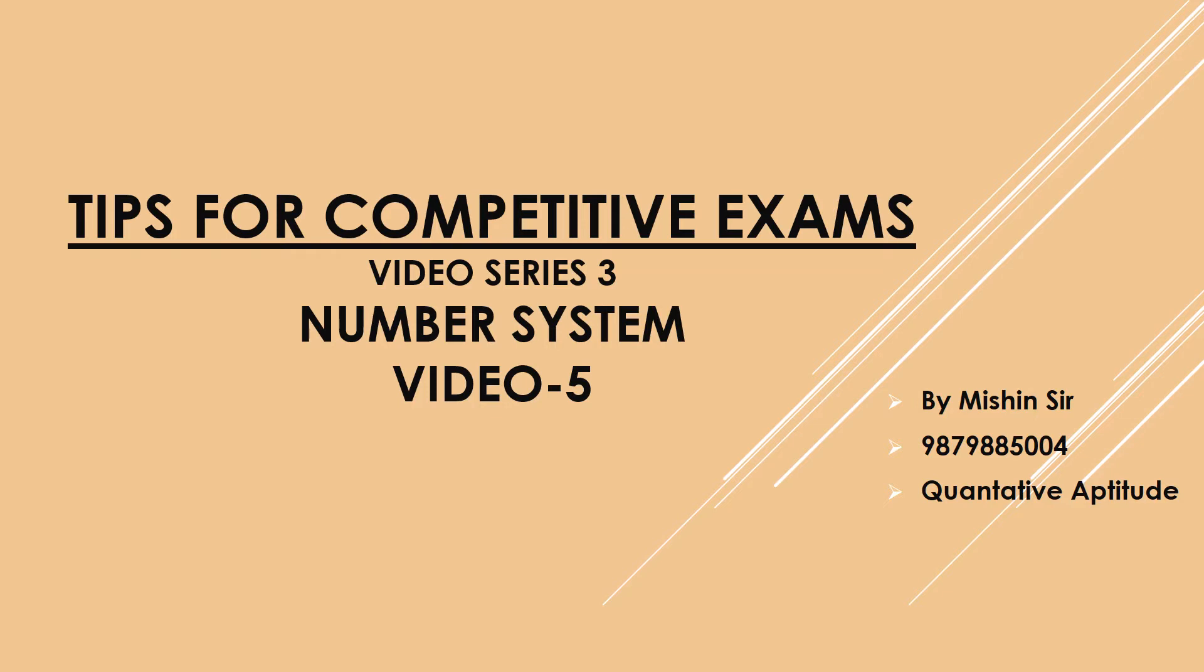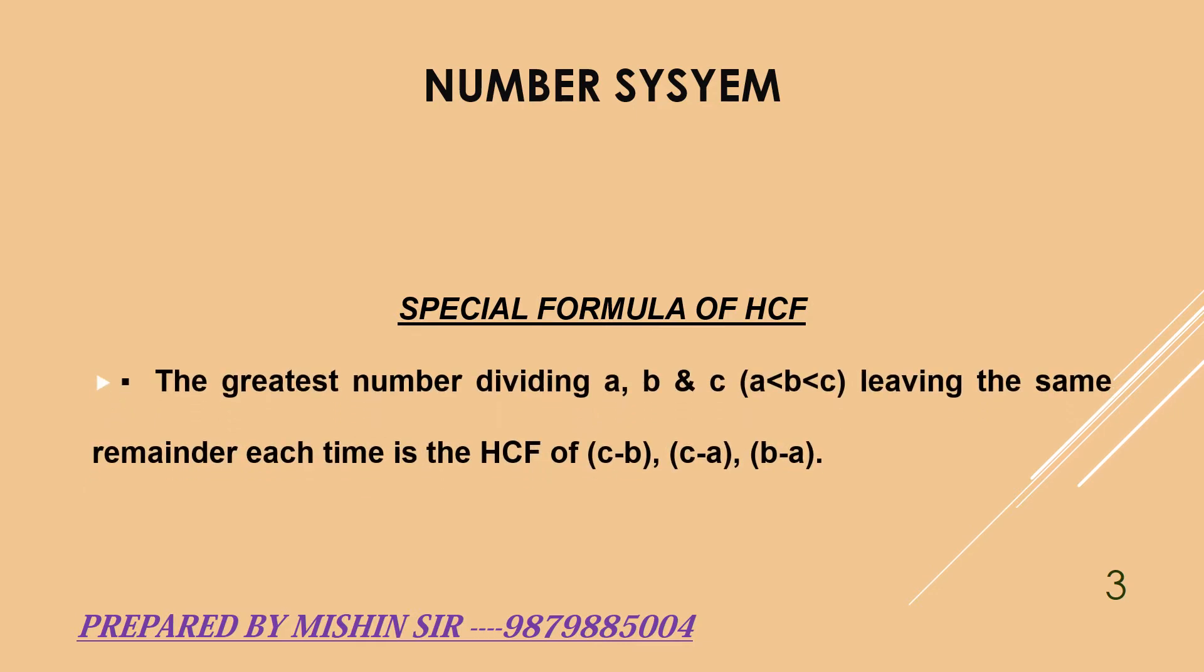Now we move to the topic number system. Today we are going to learn a special case of HCF. The greatest number dividing A, B and C where A is less than B less than C leaving the same remainder each time is the HCF of C minus B, C minus A and B minus A. Now we apply this formula.